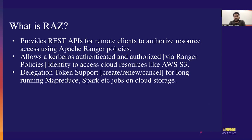So what is RAS, which I keep mentioning? RAS is a separate service on top of Ranger which provides REST APIs for remote clients to authorize resources using Apache Ranger policies. It also allows Kerberos authenticated and authorized users to access cloud storage like AWS S3 or Azure. It also supports delegation tokens, which are very important for long-running Hadoop jobs — MapReduce, Spark, Hive — for authorization, because you cannot keep calling RAS every time the token has expired or similar situations.